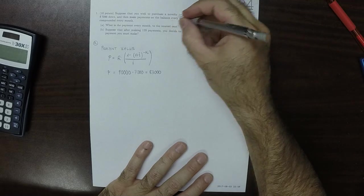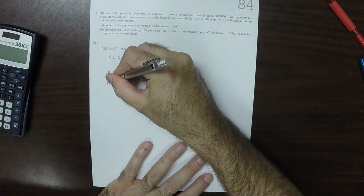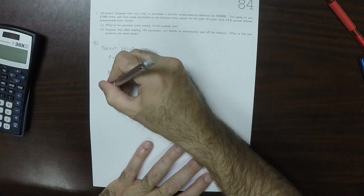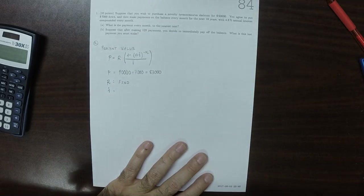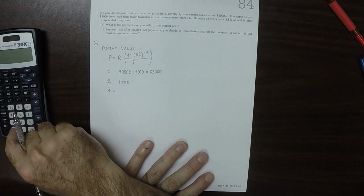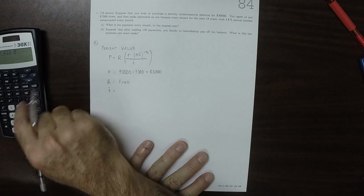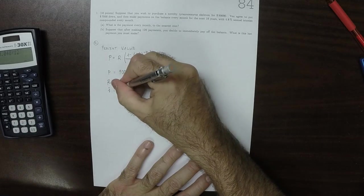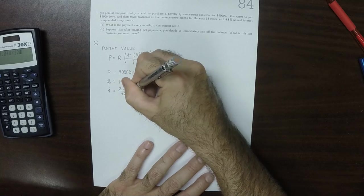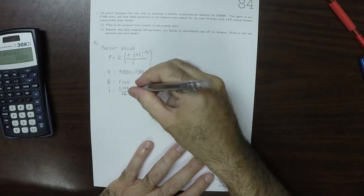What is the payment every month? So R, this is what we're trying to find. I, 4.8 percent, so 0.048 divided by 12. So 0.048 divided by 12, that is 0.004.